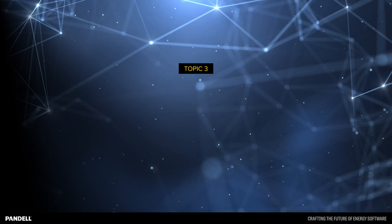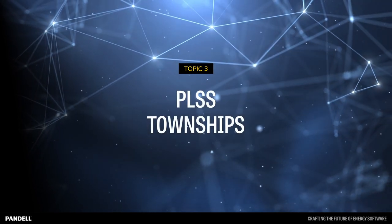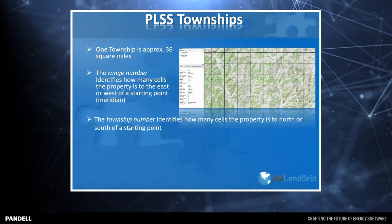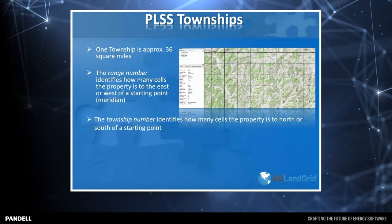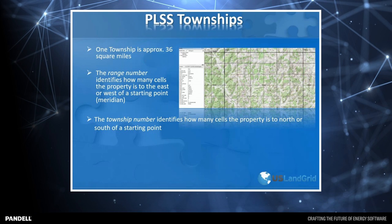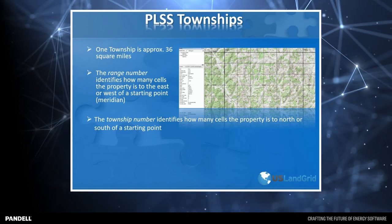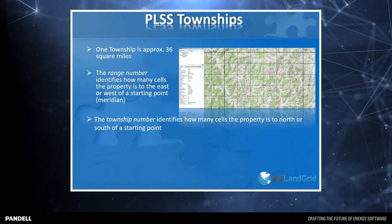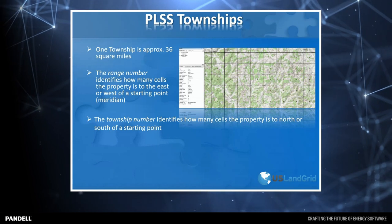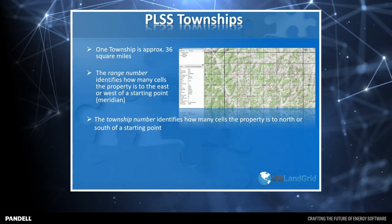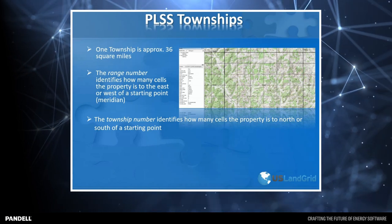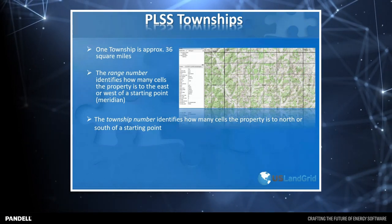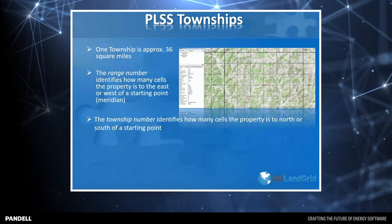There are 36 square miles in a township, or 36 sections. The range number for a township identifies how many townships the property is to the east or west of the starting point — the meridian — which is the starting point for any PLSS land grid. The township number identifies how many townships the property is to the north or south of that starting point. For example, township five north, range two east means the township is five townships to the north and two townships to the east of that meridian.